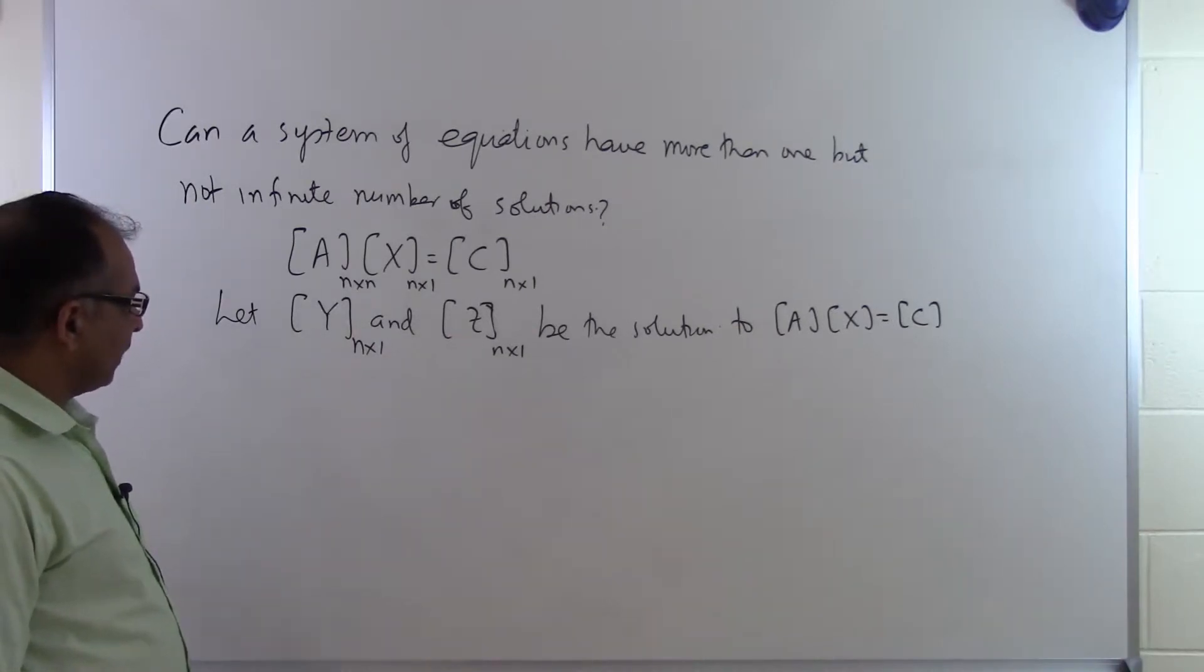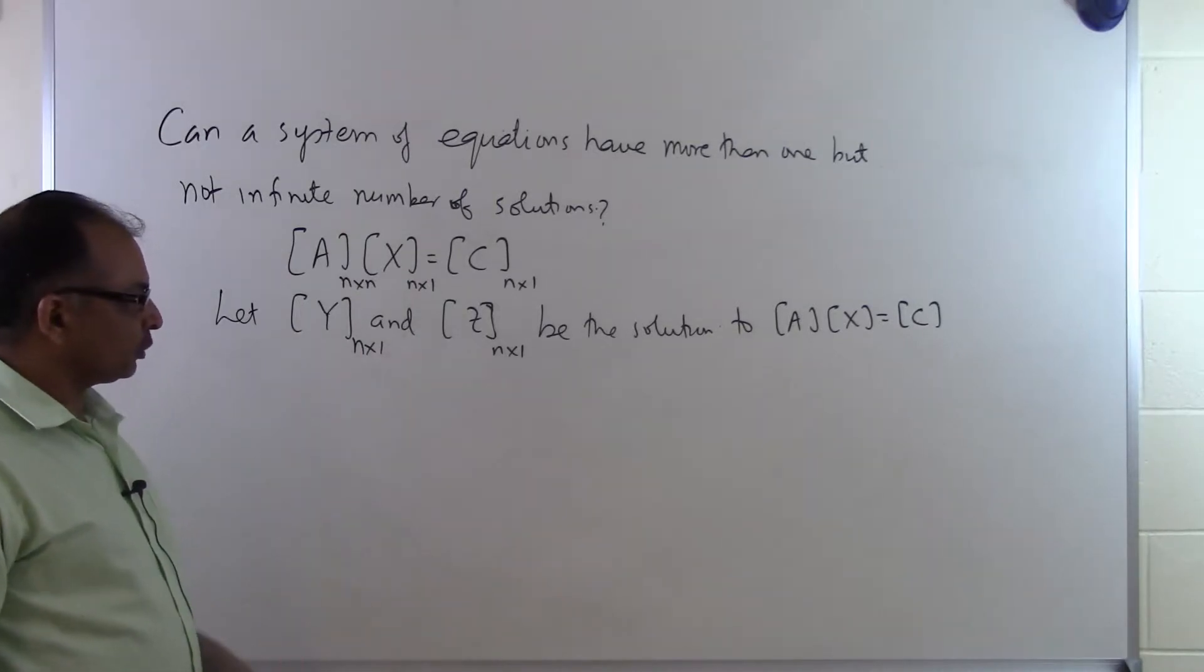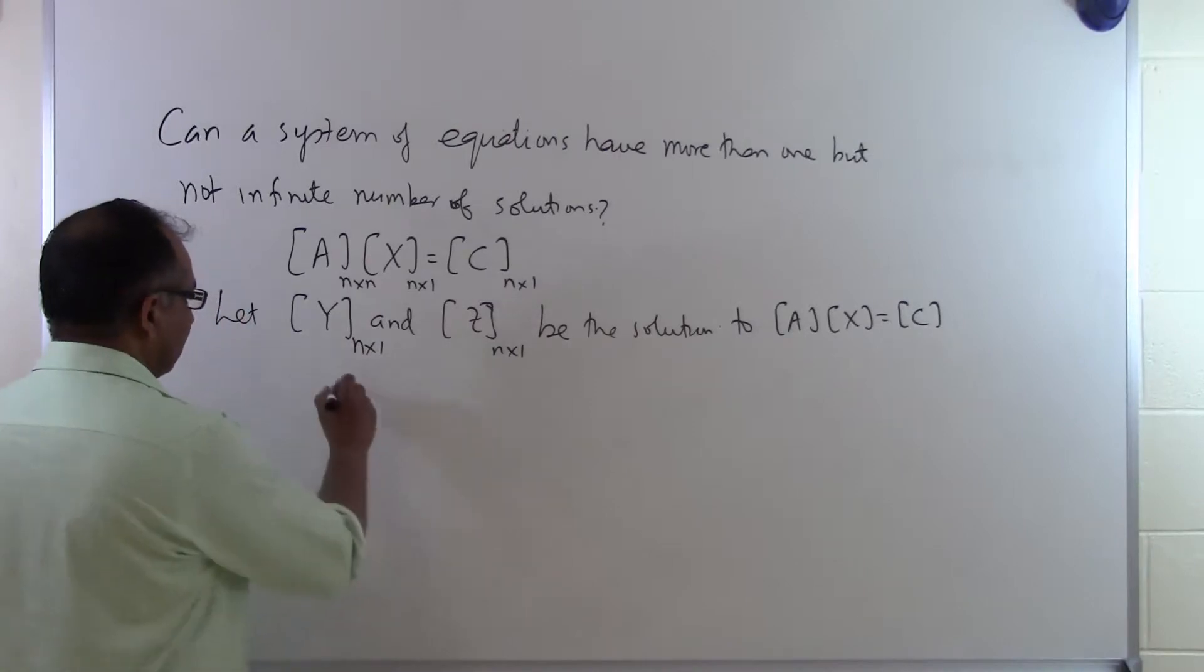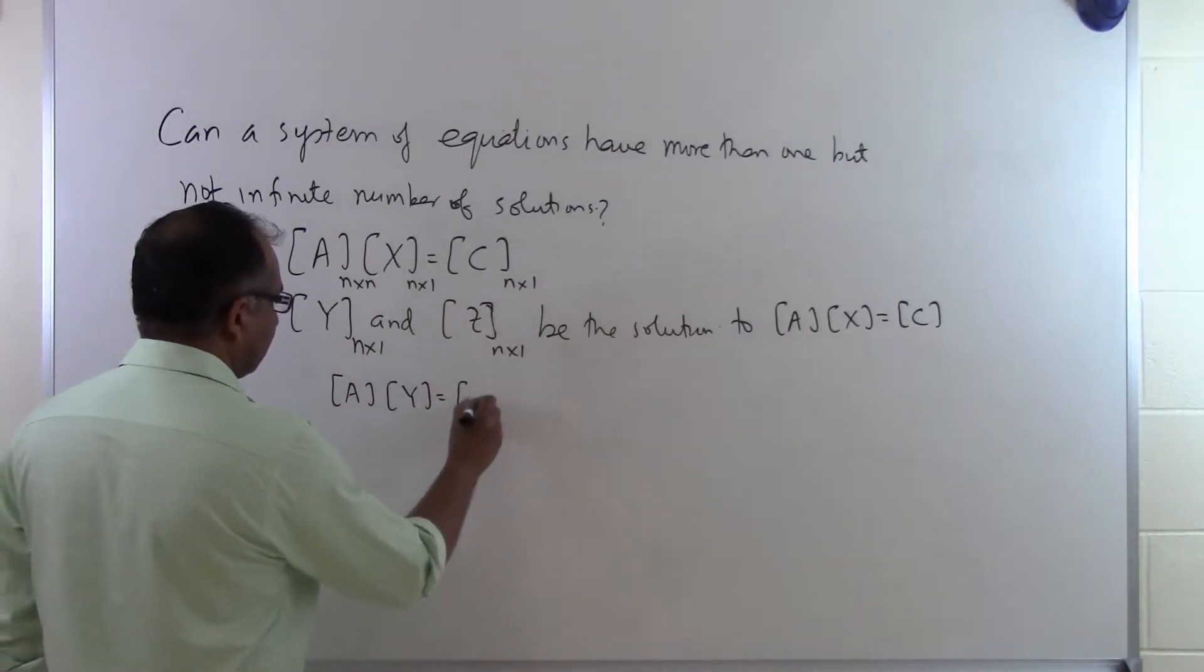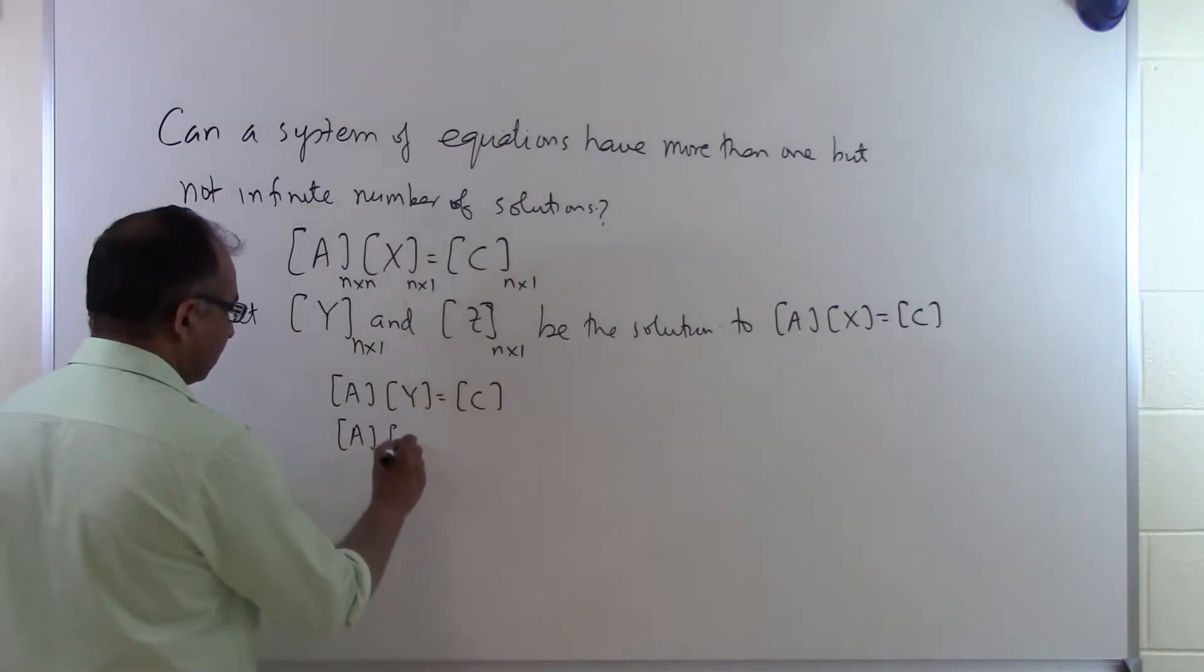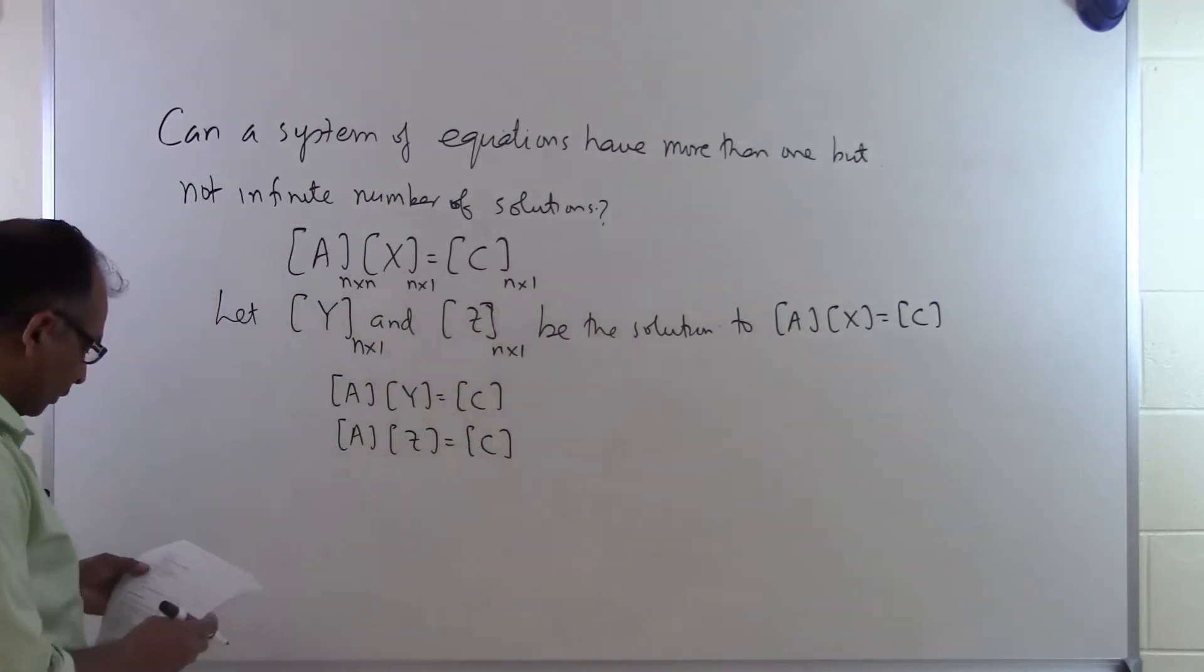And what we want to be able to show is that it is not possible to just have two solutions or three solutions or four solutions. It has to be infinite if we have more than one solution. So if Y and Z are solutions to AX equal to C, that means that A times Y has to be equal to C, and A times Z will also have to be equal to C.